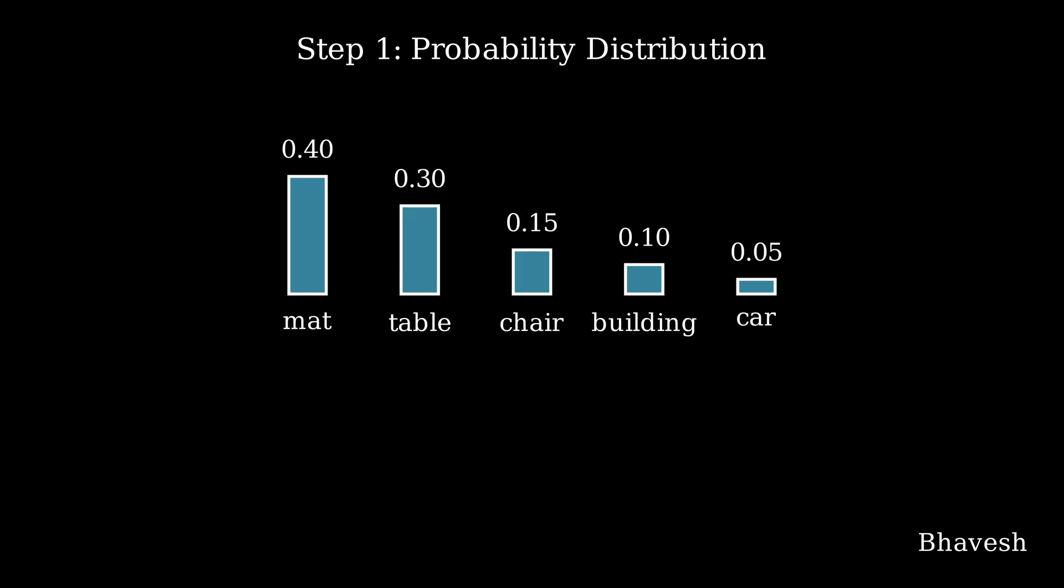Step 1 is the probability distribution. In our case, I've chosen a very small vocabulary consisting of 5 words that can follow this sequence: mat, table, chair, building, and car. Every word has a corresponding probability associated with it. The maximum probability is associated with the word 'mat', then you have 30% assigned to 'table', and so on.